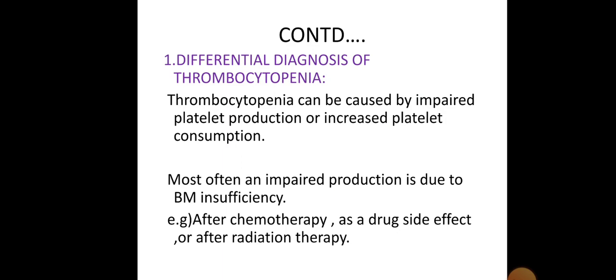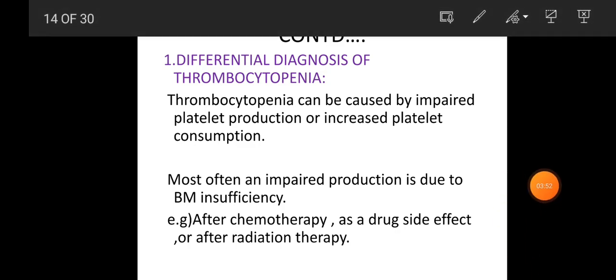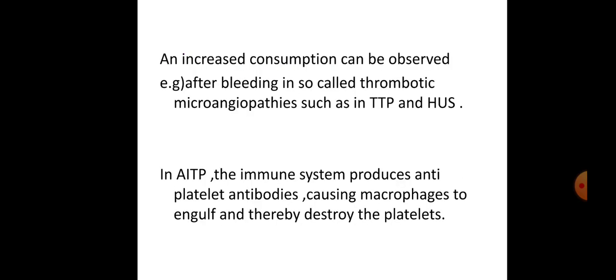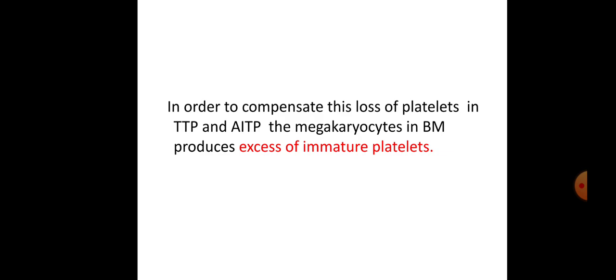The first clinical application is differential diagnosis of thrombocytopenia. Thrombocytopenia can be caused by impaired platelet production or increased platelet consumption. Impaired platelet production is most often due to bone marrow insufficiency, which can be seen after chemotherapy as a drug side effect or after radiation therapy. Increased consumption of platelets can be observed in conditions such as bleeding, thrombotic microangiopathy such as thrombotic thrombocytopenic purpura (TTP), and hemolytic uremic syndrome. In autoimmune thrombocytopenia, the immune system produces anti-platelet antibodies which cause macrophages to engulf and destroy the platelets. To compensate for this loss of platelets in TTP and AITP, the megakaryocytes in the bone marrow produce an excess of immature platelets.